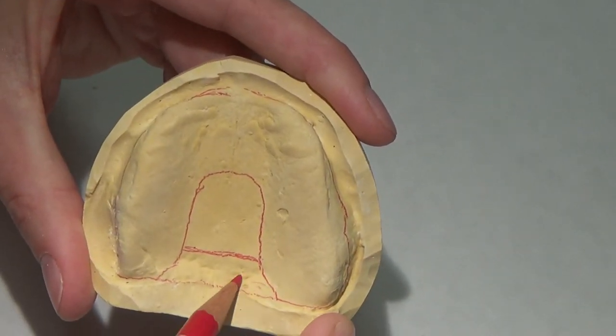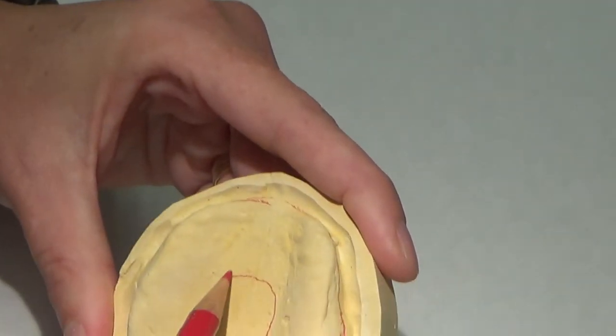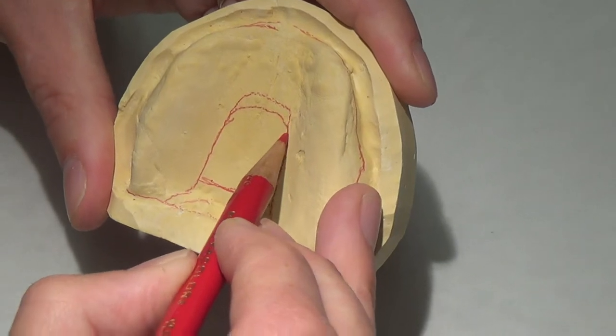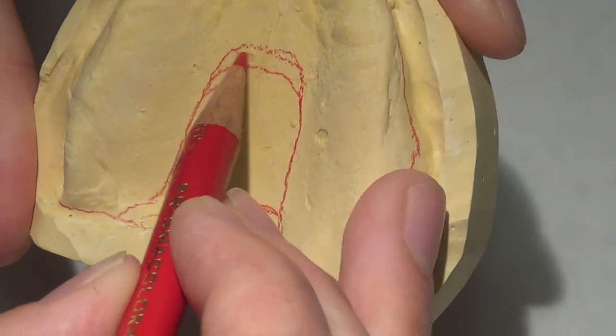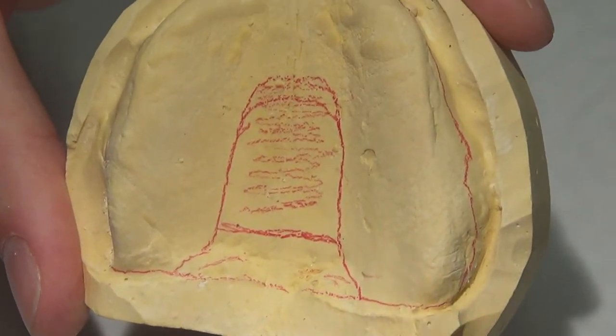This is actually a good example of a patient that I may do the stop. Because of these angles here and this kind of funny anatomy that she has, I'm probably going to make my stop in the center like the one in our lecture today where I don't actually extend it to the posterior border.